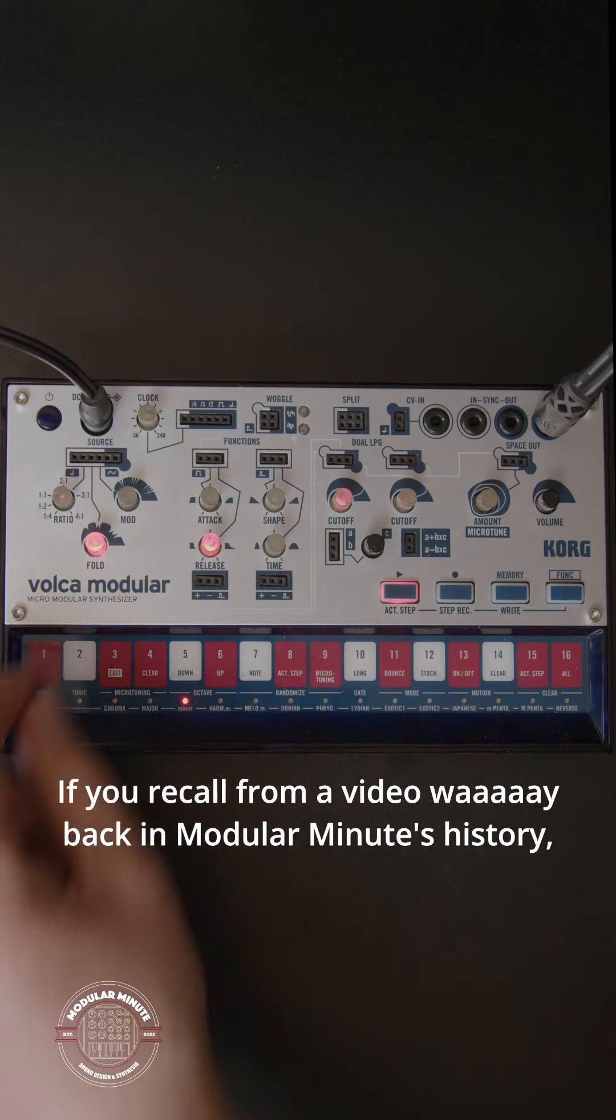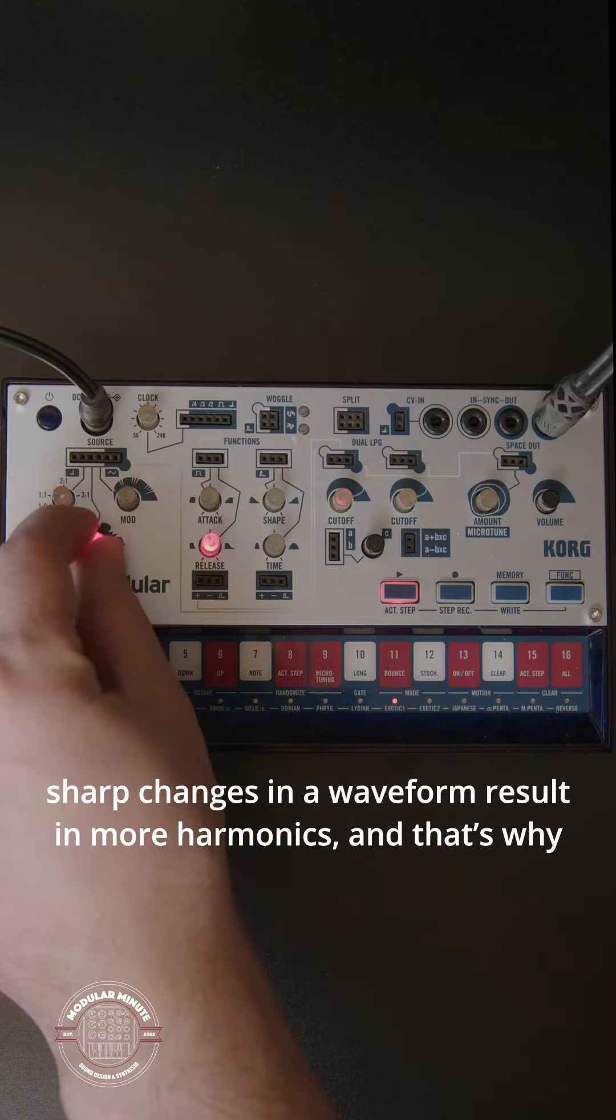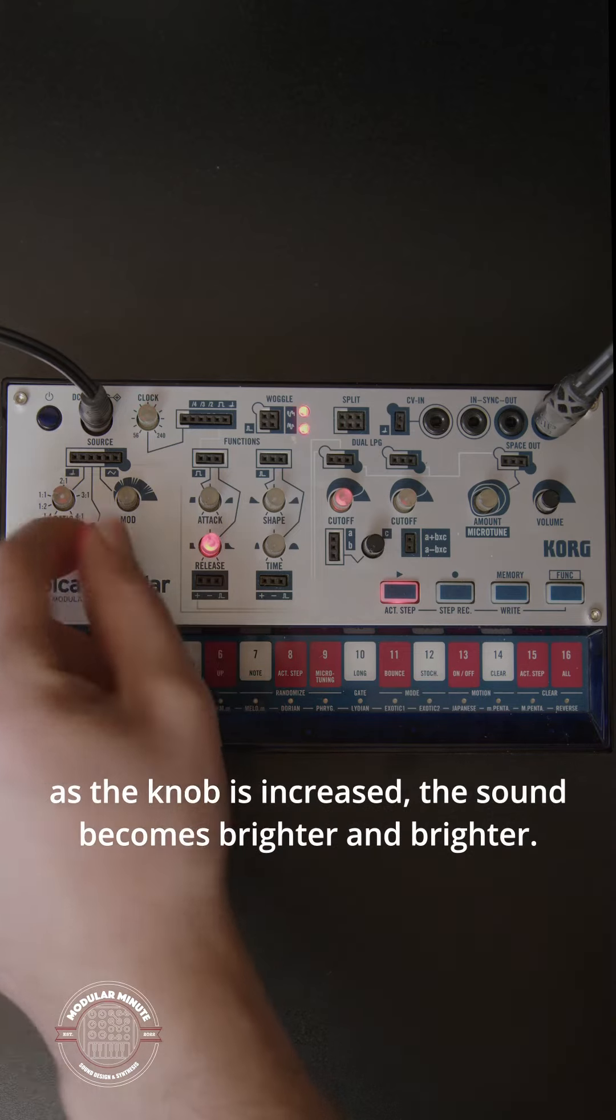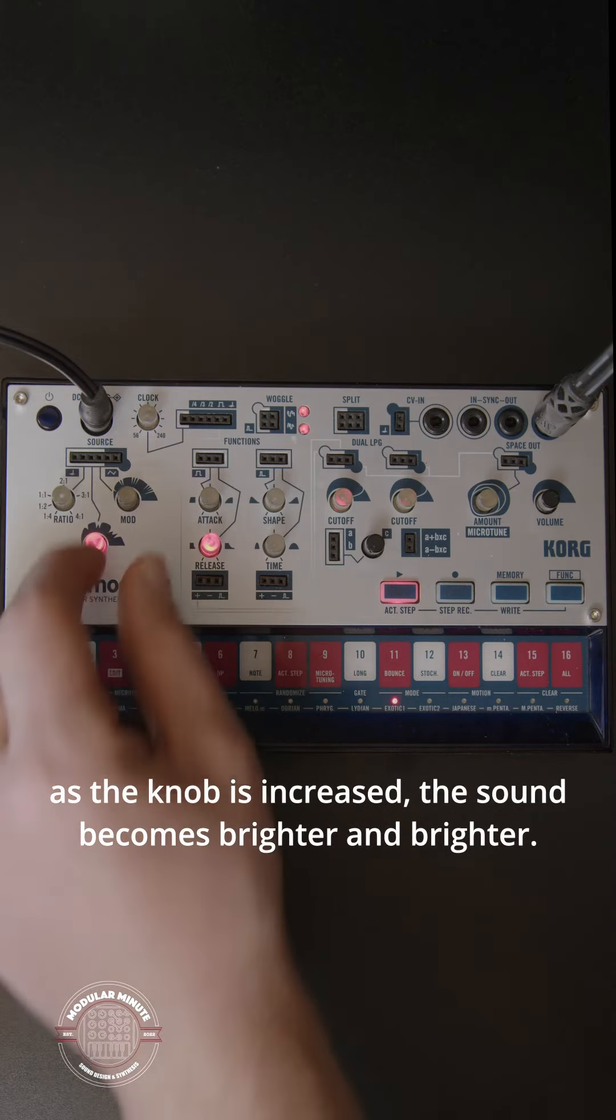If you recall from a video way back in modular minutes history, sharp changes in a waveform result in more harmonics, and that's why as the knob is increased, the sound becomes brighter and brighter.